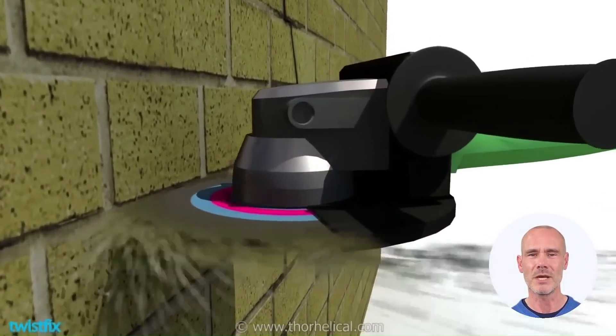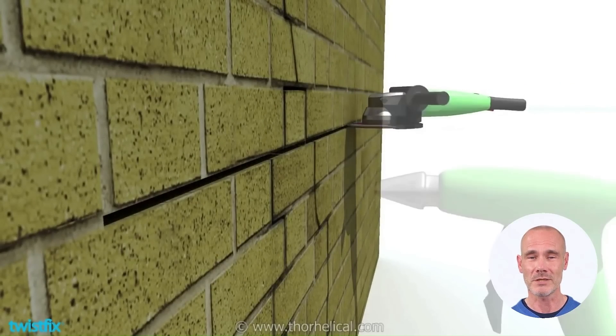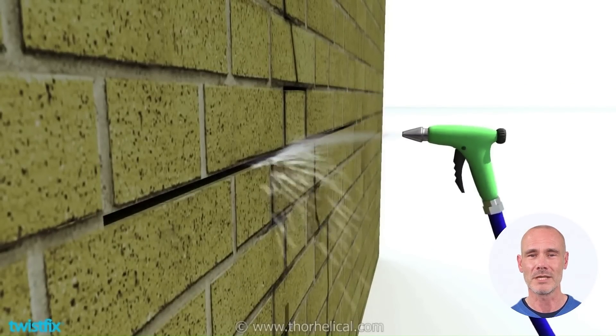Firstly grind out the mortar joints to about one-quarter depth, and 500mm each side of the crack. Flush with water to clean and thoroughly soak the joint.